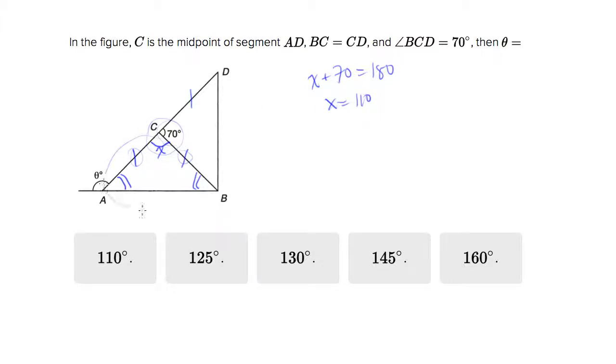But we also know down here in this triangle that the sum of those angles, let's call the unknown angle Y, must be 180. So X plus Y plus Y equals 180. X is 110, so 110 plus 2Y equals 180. 2Y must equal 70, and Y must equal 35.